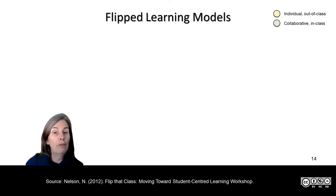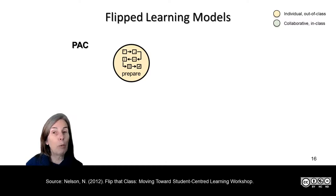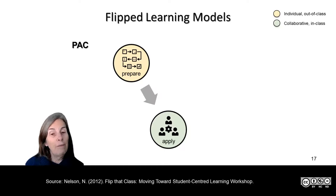There are a couple of different flipped learning models. The first one is called PAC and it's got three phases, the first of which is preparation. This is done outside of class time, and this is making use of those resources, getting students ready to come into that interactive dynamic learning environment. That phase is called the application or apply phase, so this is where our students are working together to solve problems, to talk about those new ideas and to really get a good deep understanding of them.